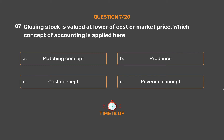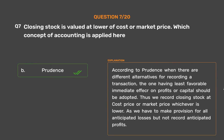The correct answer is Option B: Prudence. According to Prudence, when there are different alternatives for recording a transaction, the one having the least favorable immediate effect on profits or capital should be adopted. Thus we record closing stock at cost price or market price whichever is lower, as we must provide for all anticipated losses but not record anticipated profits.